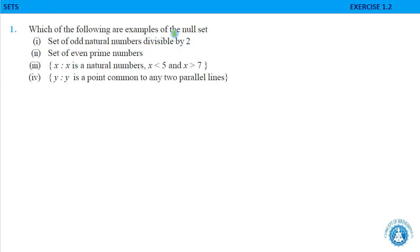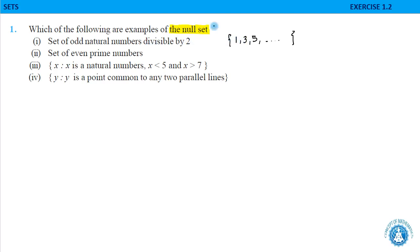We have to identify the null set out of the four given sets. First: set of odd natural numbers divisible by 2. If we list out the odd natural numbers, they are 1, 3, 5, and so on. But none of these are divisible by 2, so this will be a null set.